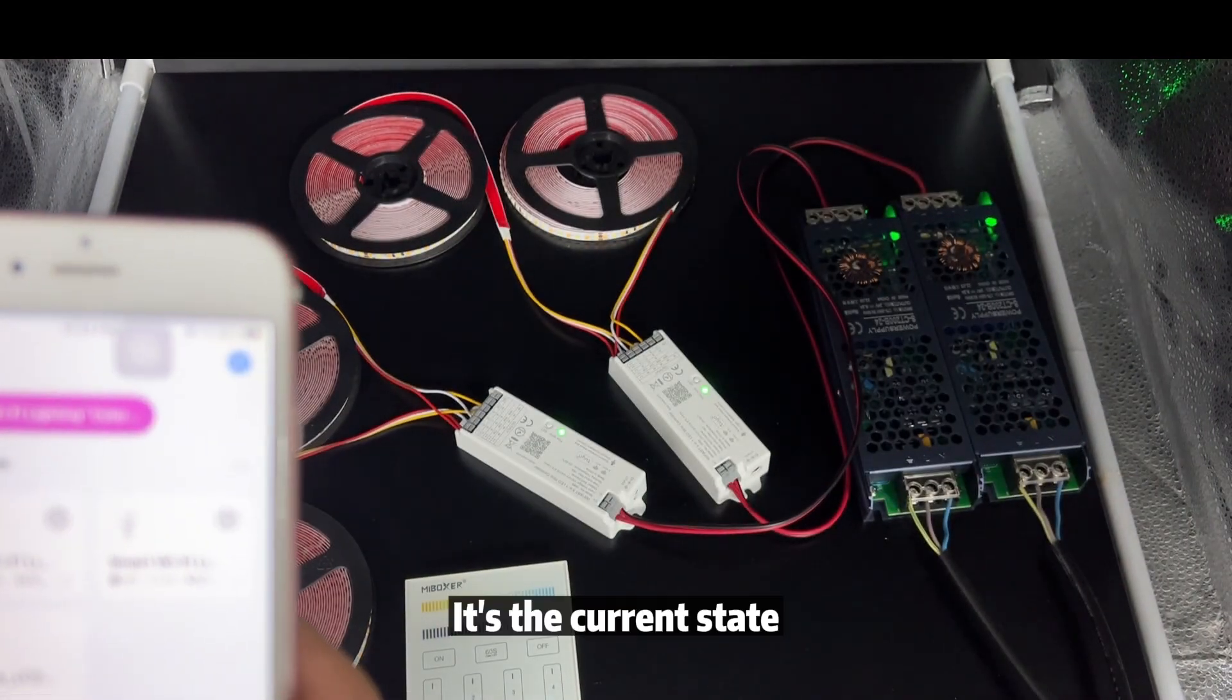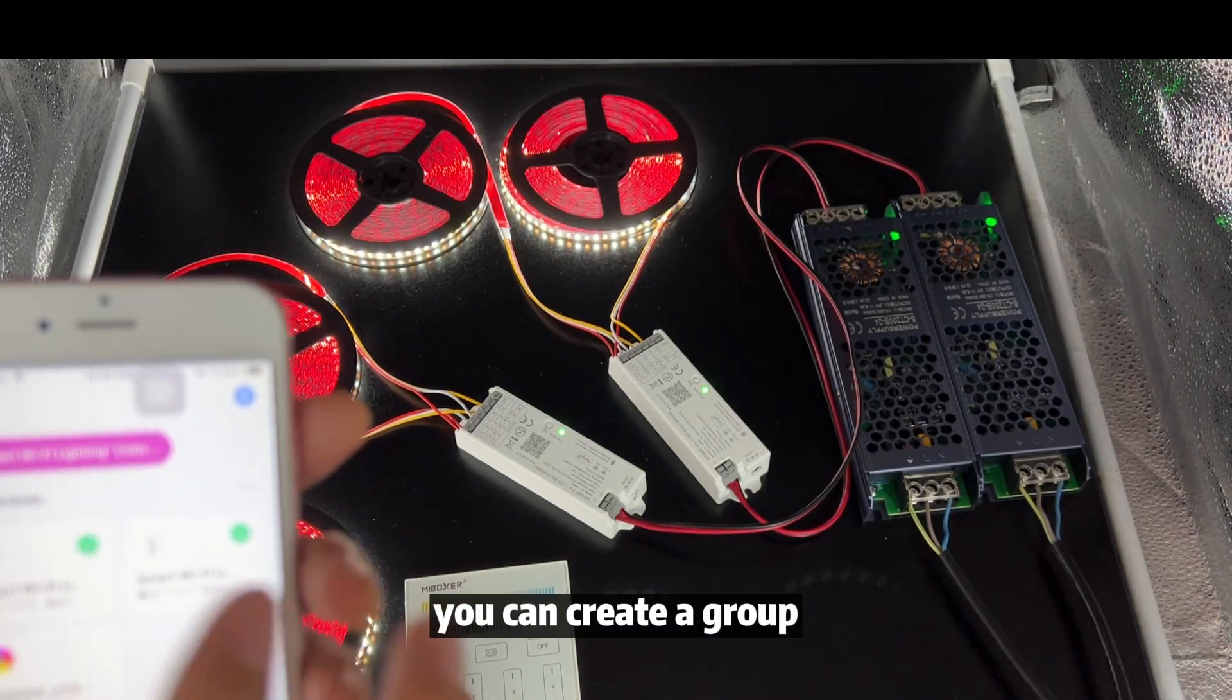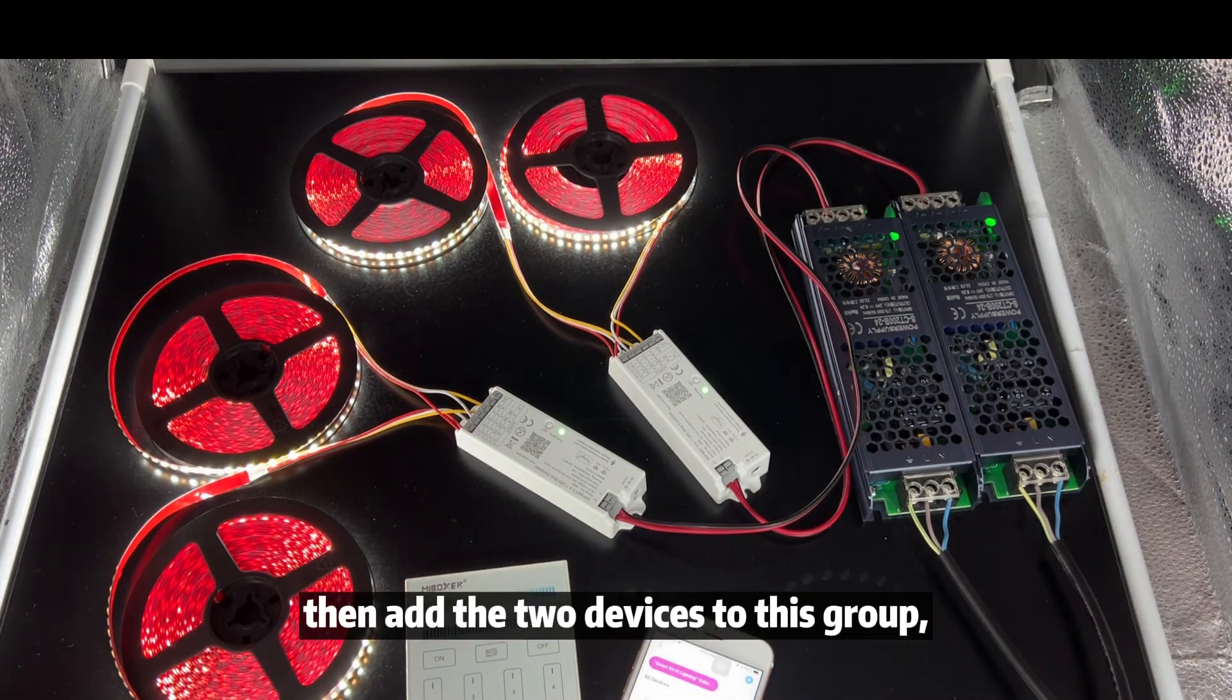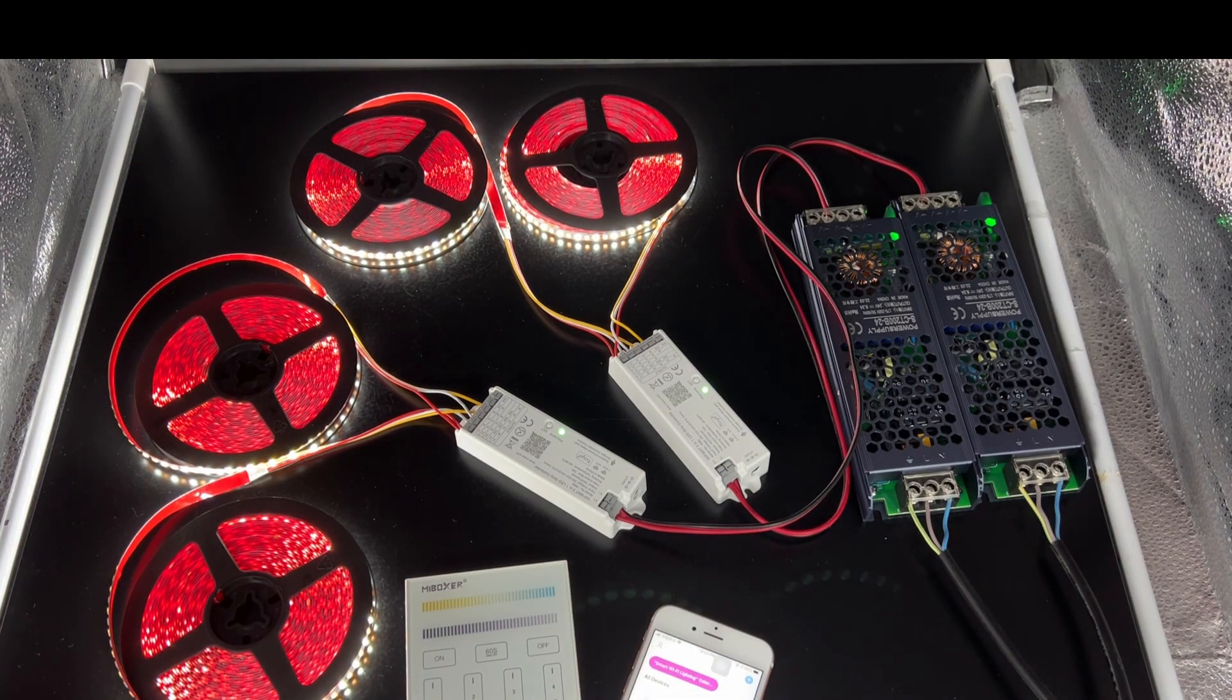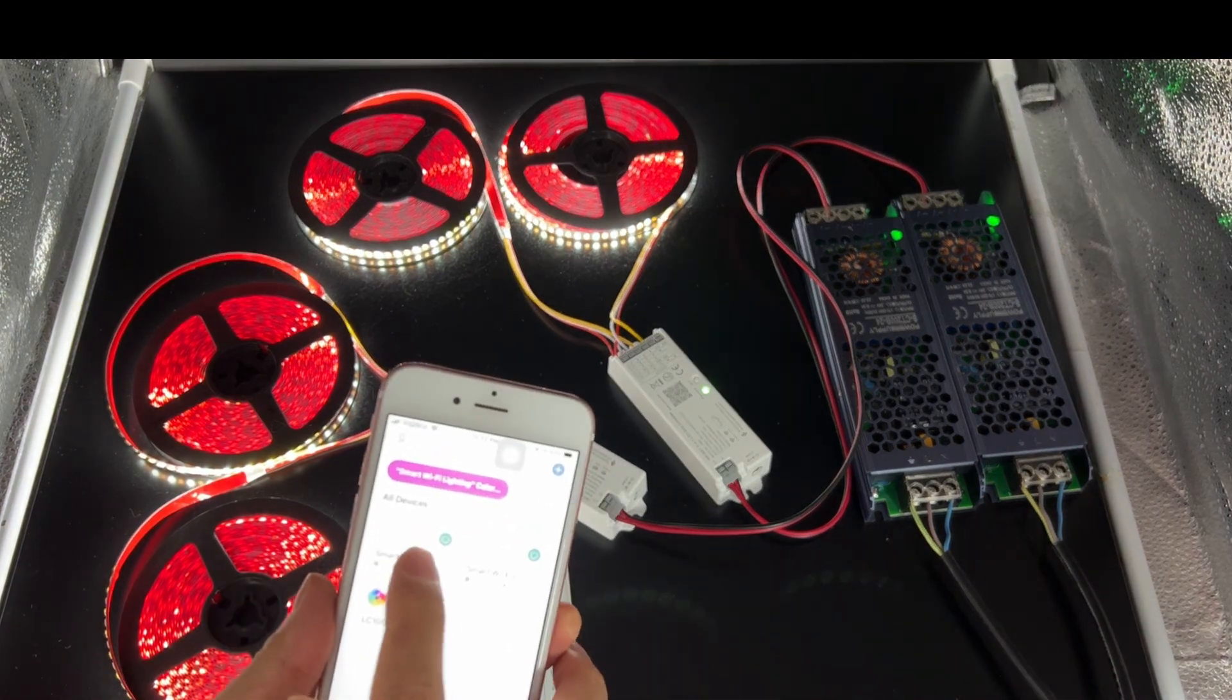After matching, it's the current state. The system has two controllers and we also match to power supplies. You can create a group. Then add the two devices to this group.